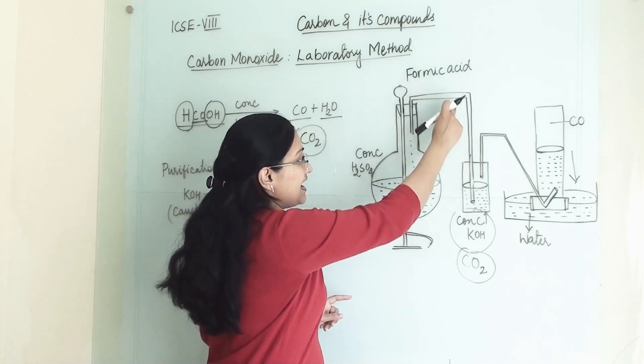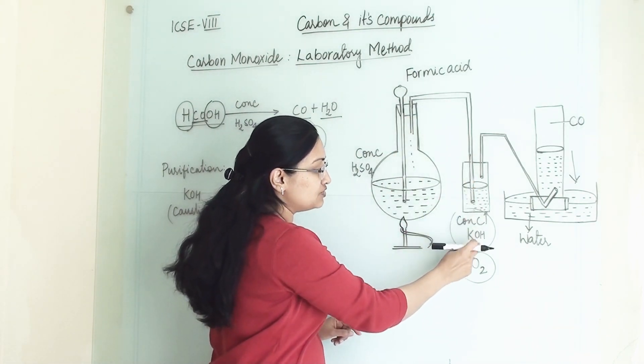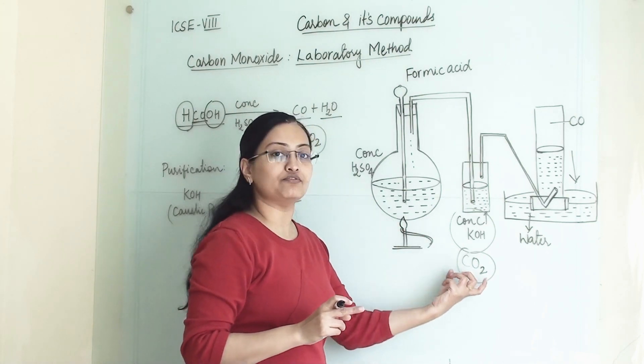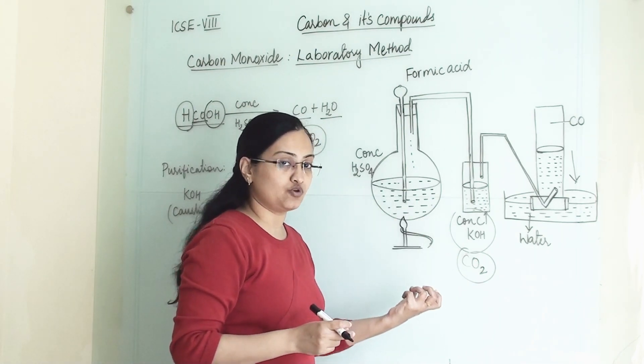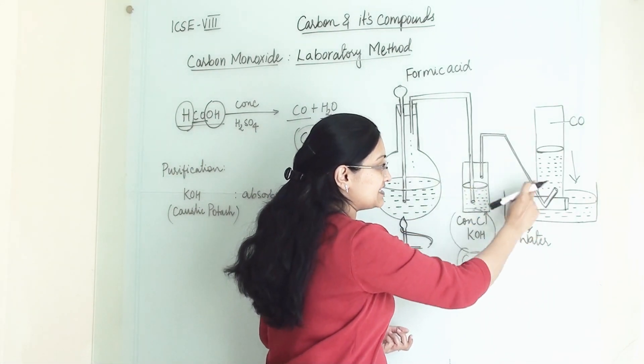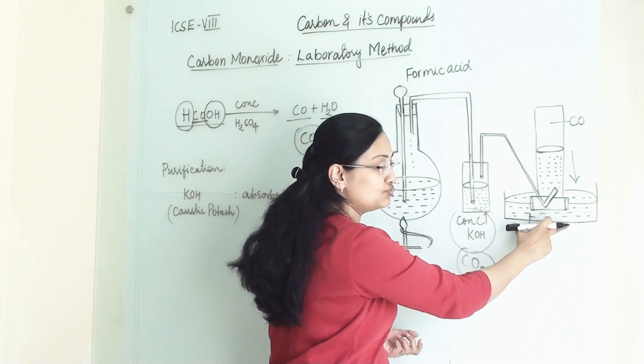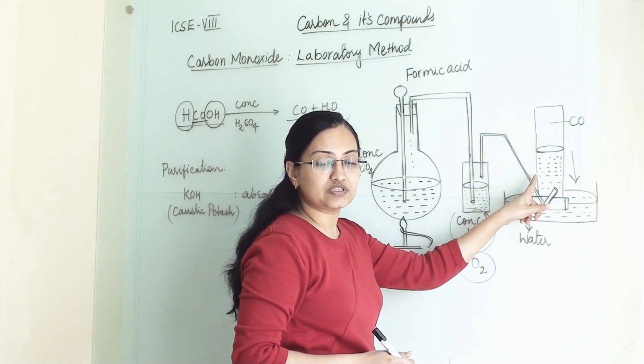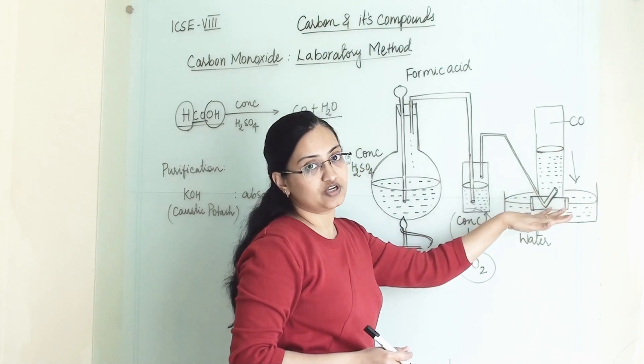So first we are adding this delivery tube into this concentrated KOH solution. So whatever impurities of carbon dioxide will be there, that will get absorbed, and remaining carbon monoxide, the pure carbon monoxide gas will come to this water bath. And here we are collecting carbon monoxide gas by downward displacement of water.